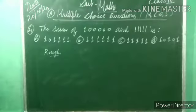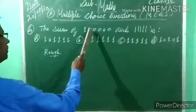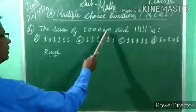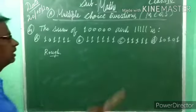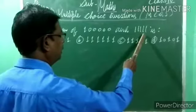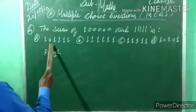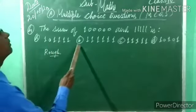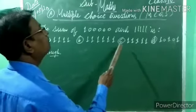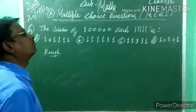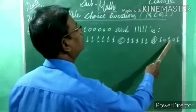Fourth question: the sum of one lakh and eleven thousand one hundred eleven. Options: A) one lakh one thousand one hundred eleven, B) one lakh eleven thousand one hundred eleven, C) eleven thousand one hundred eleven, D) ten thousand one hundred one.